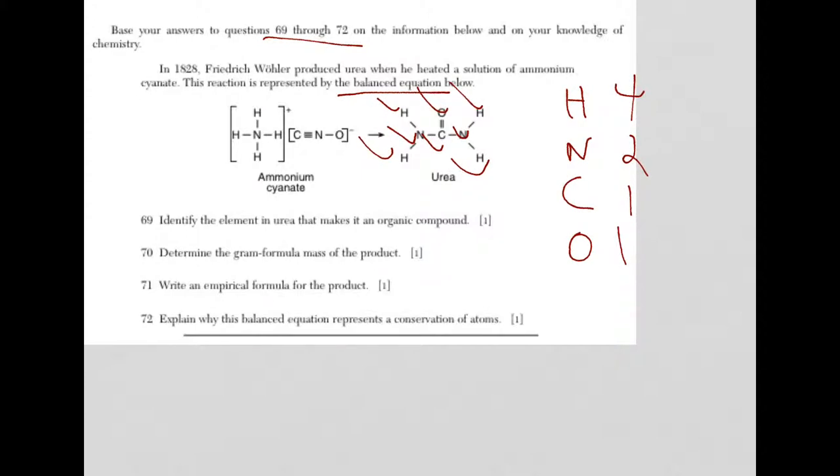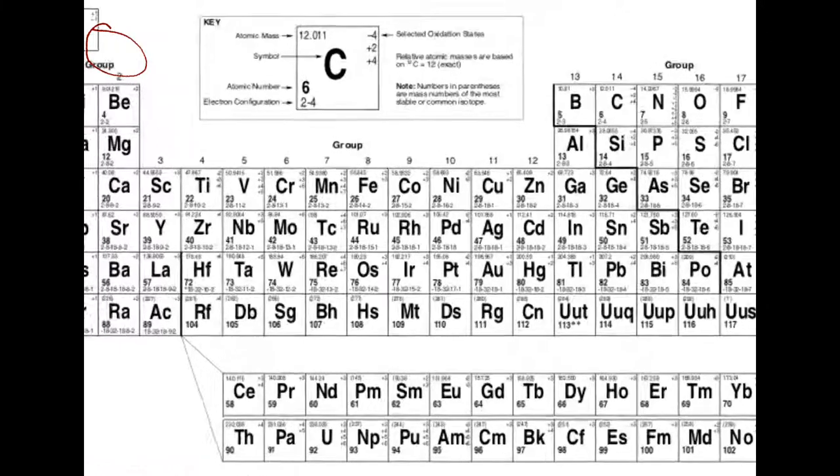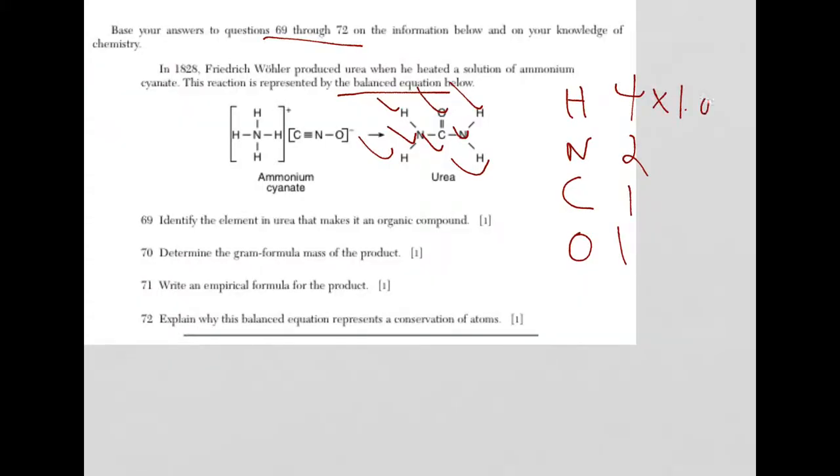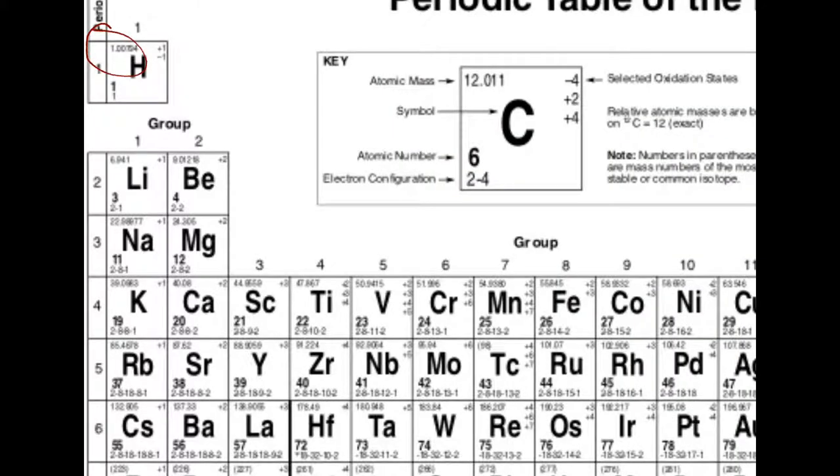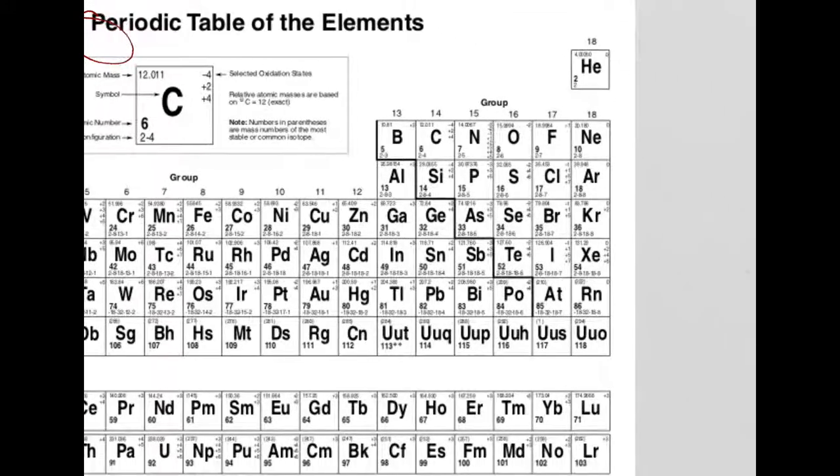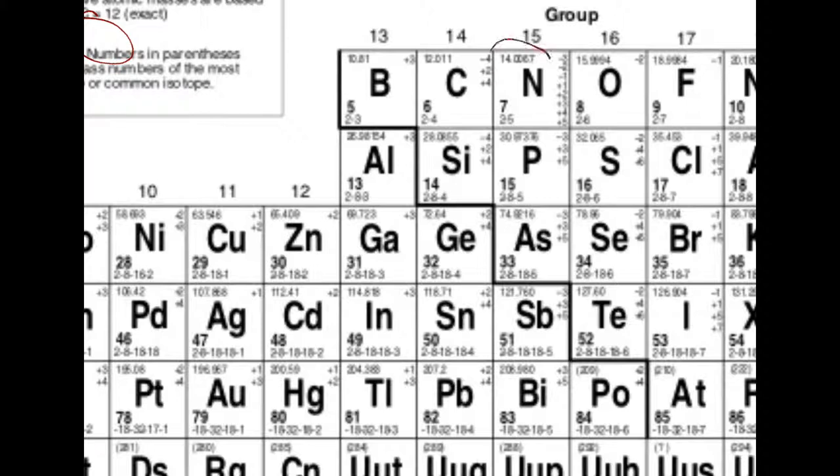Now I need the masses for these elements off of the periodic table. So you need to take out your periodic table. Hydrogen is 1.01. I'm going to multiply the number of times by 1.01. Now I need nitrogen. Nitrogen is essentially 14. Carbon is 12. And oxygen, 15.9994, which is 16.